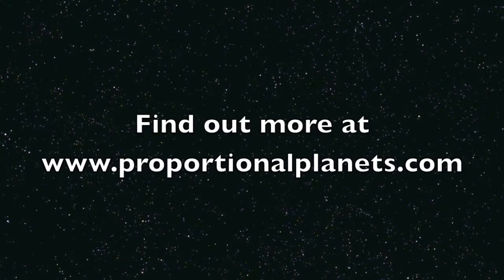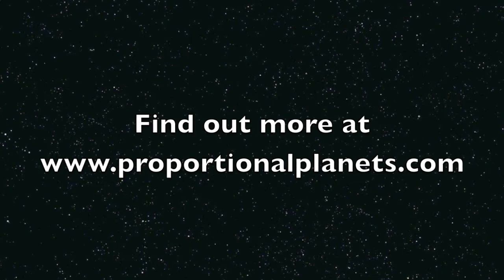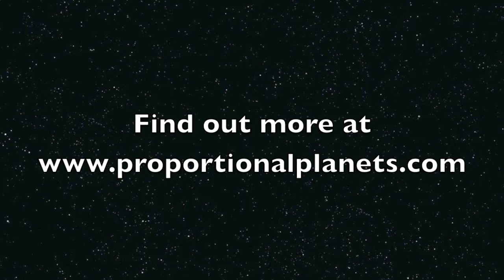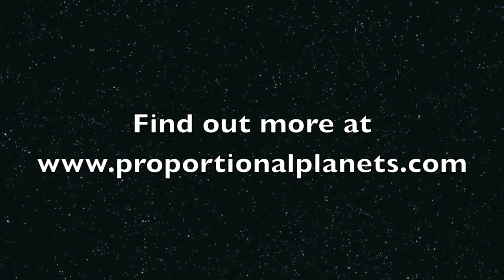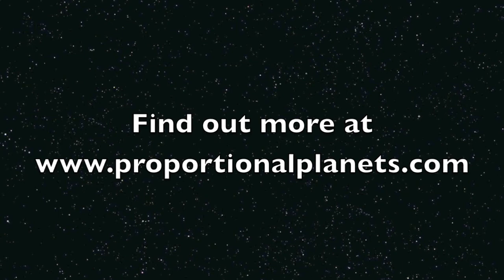Go to proportionalplanets.com where you can buy a full set of the planets. They are high-quality images printed on vinyl, already pre-cut with an adhesive backing. All you have to do is pull off the backing and stick them on your wall. They look great in classrooms or your home. Visit proportionalplanets.com and check it out. Thanks!